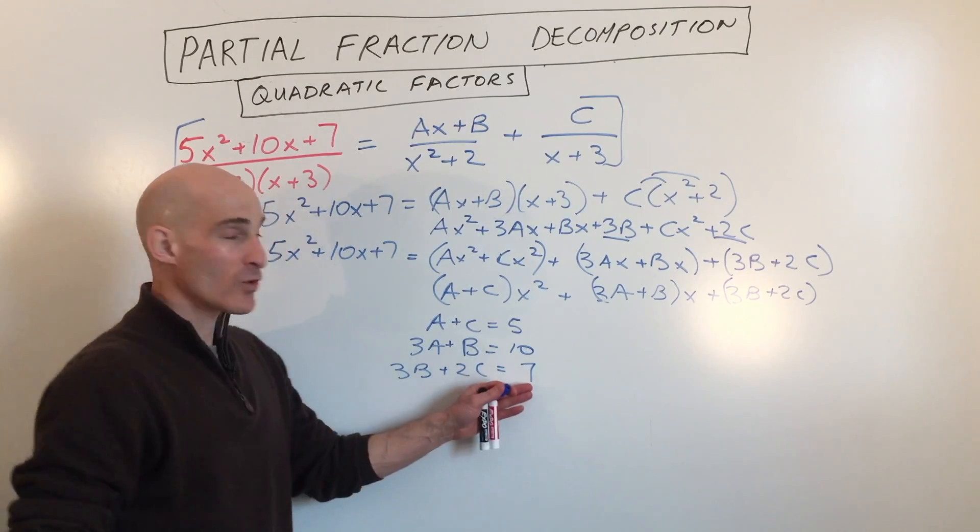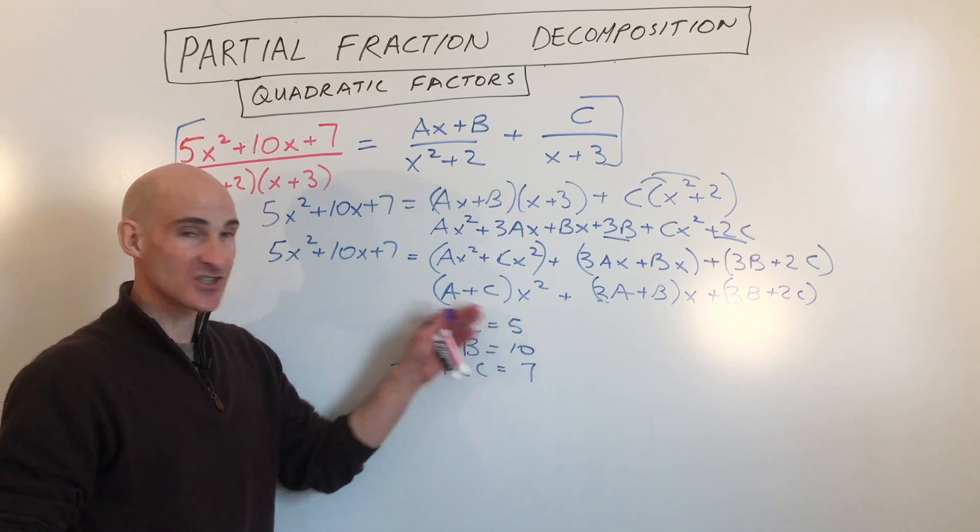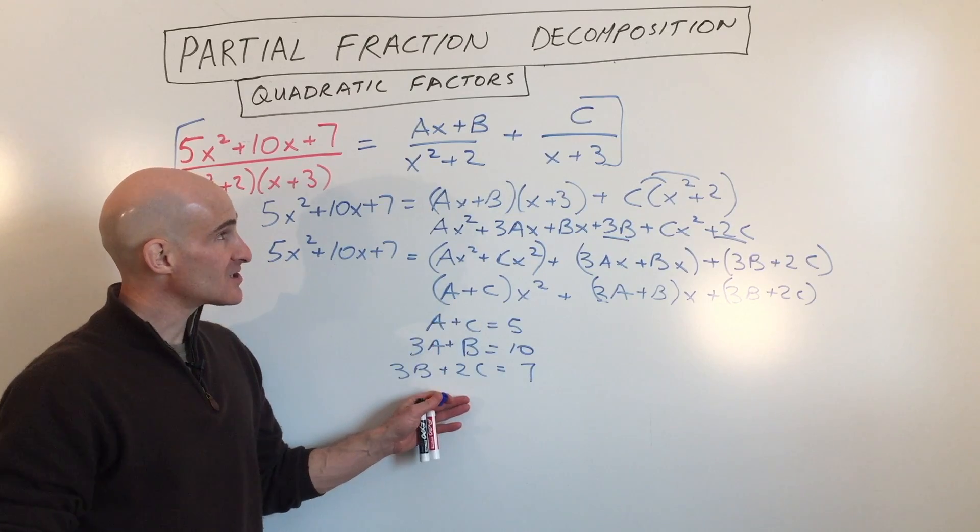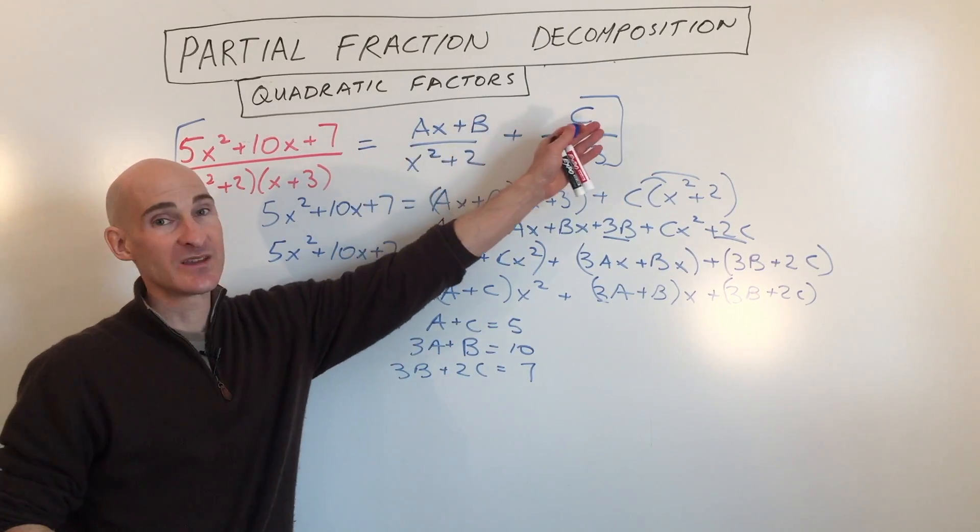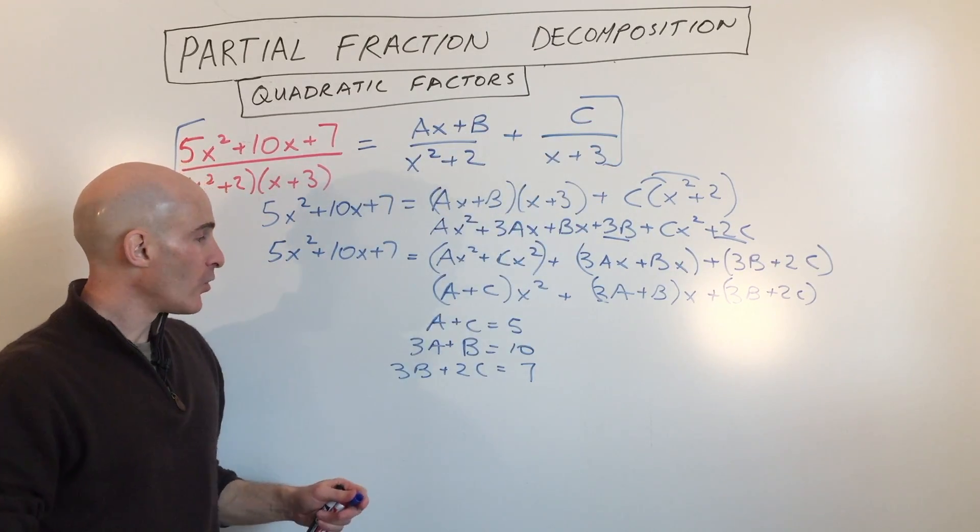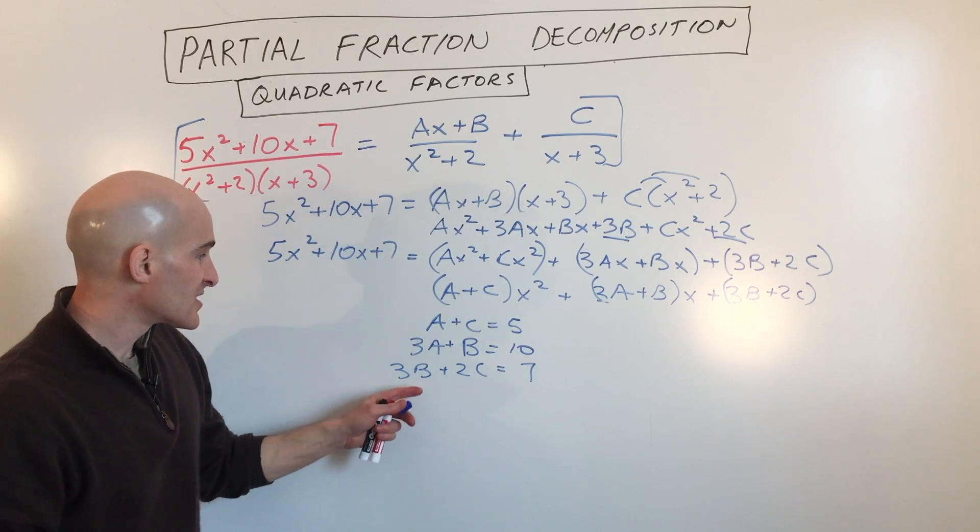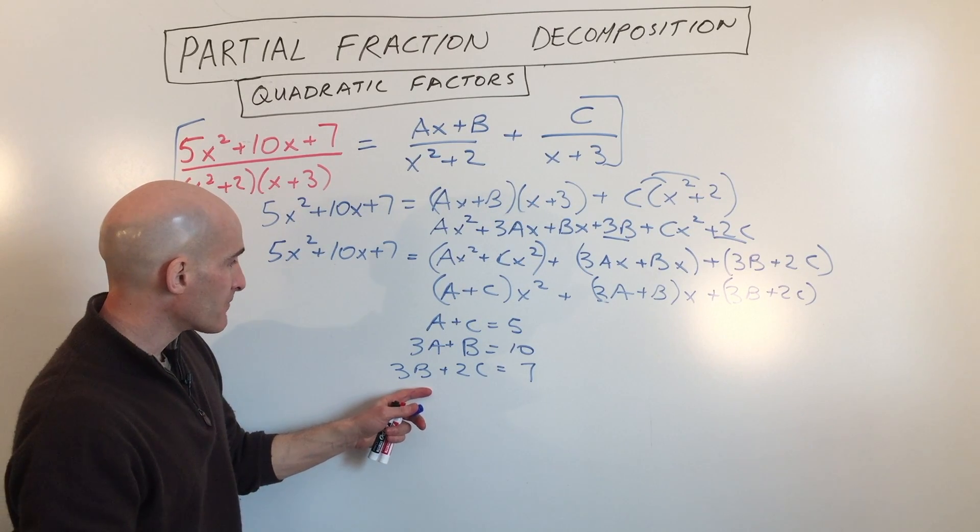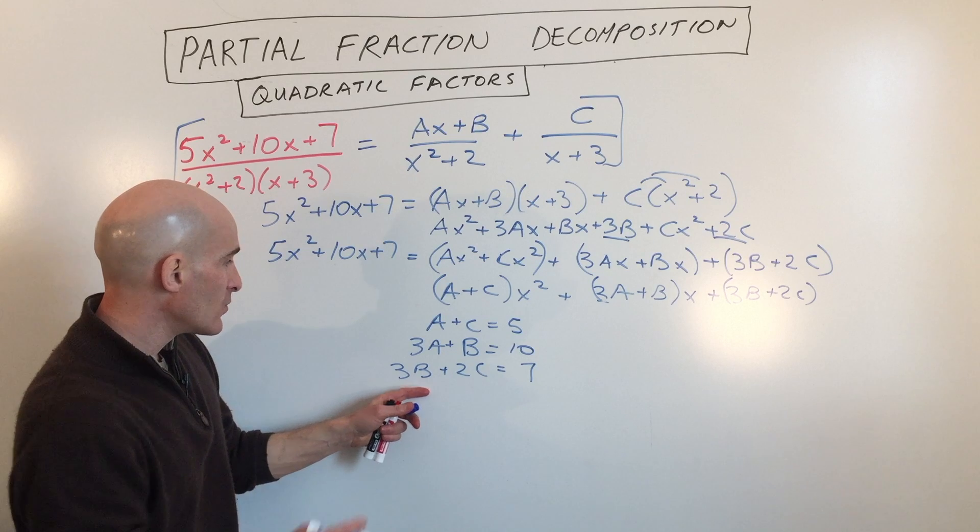So now you can see what we have here is we have a system of equations. We're going to solve this system. And we're going to find our a, b, and c. So let's take a look at this system. So what should we try to eliminate here? Well, let's see, we've got a, a, we've got b and b, we've got c and c.